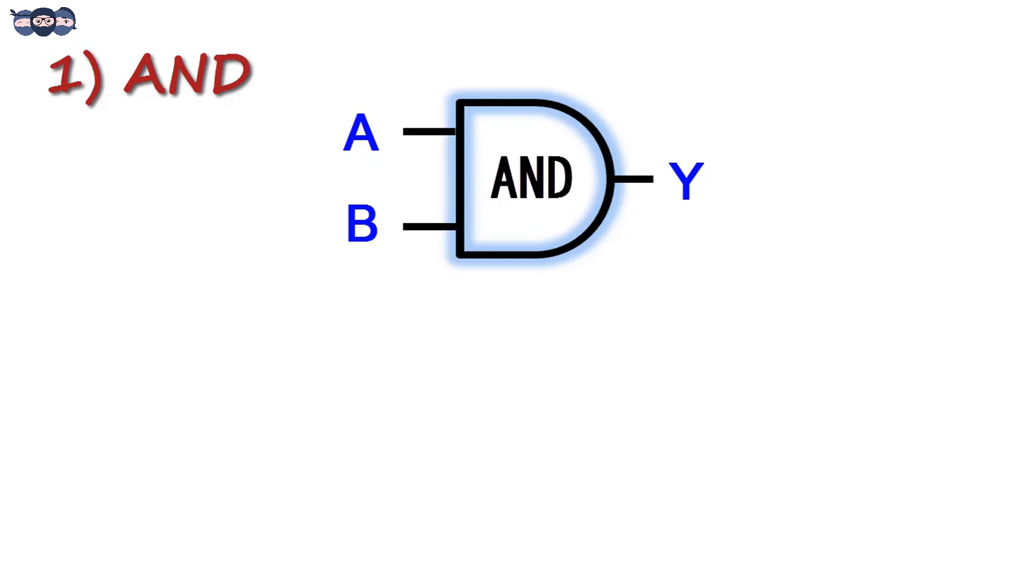The first basic gate is an AND gate. This is a symbol for AND gate. A and B are two inputs resulting in a single output Y. The Boolean expression is read as Y equals A AND B.